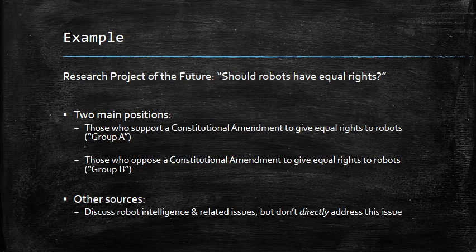Going to the robot rights example, let's say we've found two main positions in our sources: those who support a constitutional amendment to give equal rights to robots — Group A — and those who oppose it — Group B. We might also have sources that discuss robot intelligence or legal issues about human rights and constitutional amendments, but don't directly address the question of rights in relation to robots. There might be other material we can use and reference in this paper.